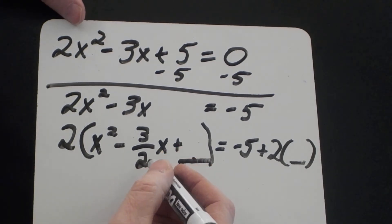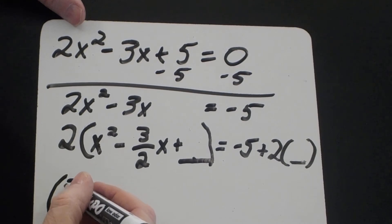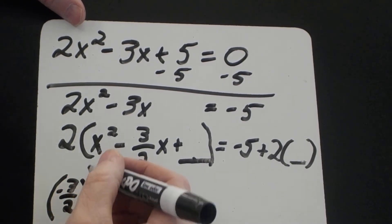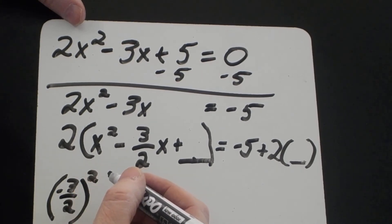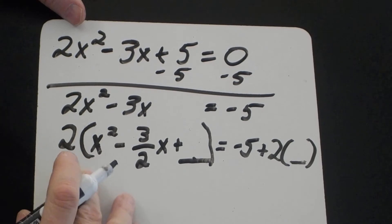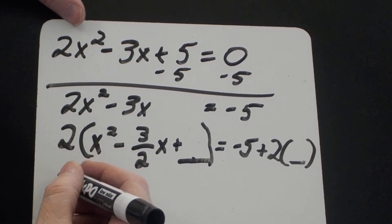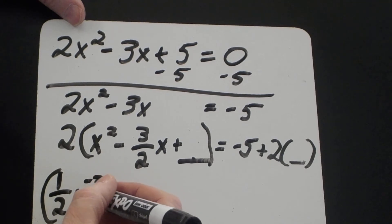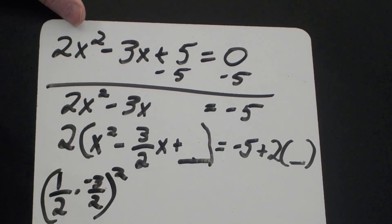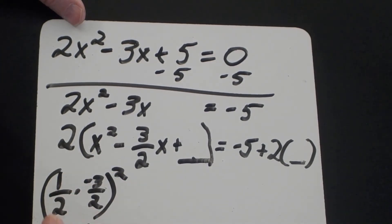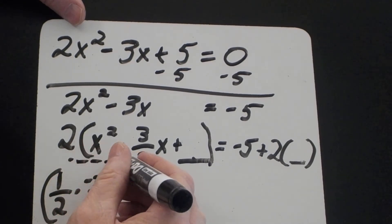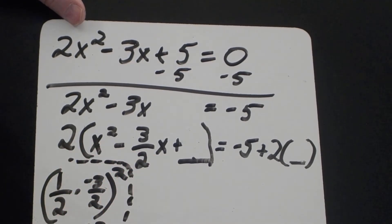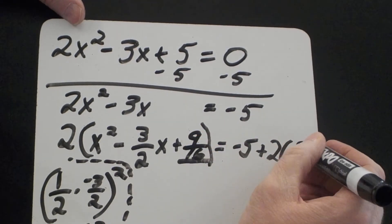The b value is negative three over two. To complete the square, I take one-half times negative three over two and then square it. One-half times negative three-halves is negative three-fourths, and squaring that gives nine-sixteenths. So nine-sixteenths goes inside the parentheses, and 2 times nine-sixteenths goes on the right side.